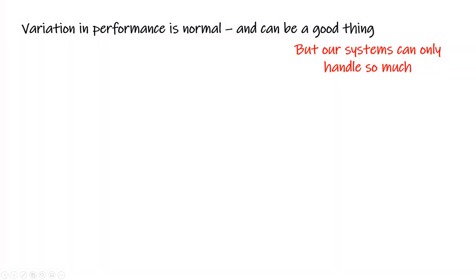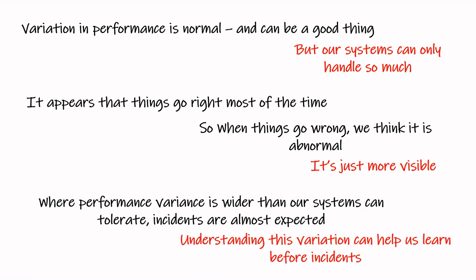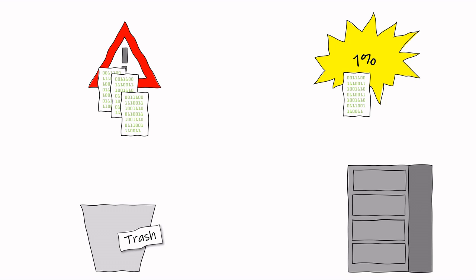So what can we learn from this? There will always be a difference between work as imagined and work as done, and there will always be performance variability — this is normal and even vital for organizations to be flexible and adaptable. When incidents do happen, these may be exceptional outcomes but not exceptional events. It is unhelpful to blame someone or put these down to bad luck. While our systems can cope with variation up to a point, the difference between a safe outcome and a dangerous one is closer than we think.